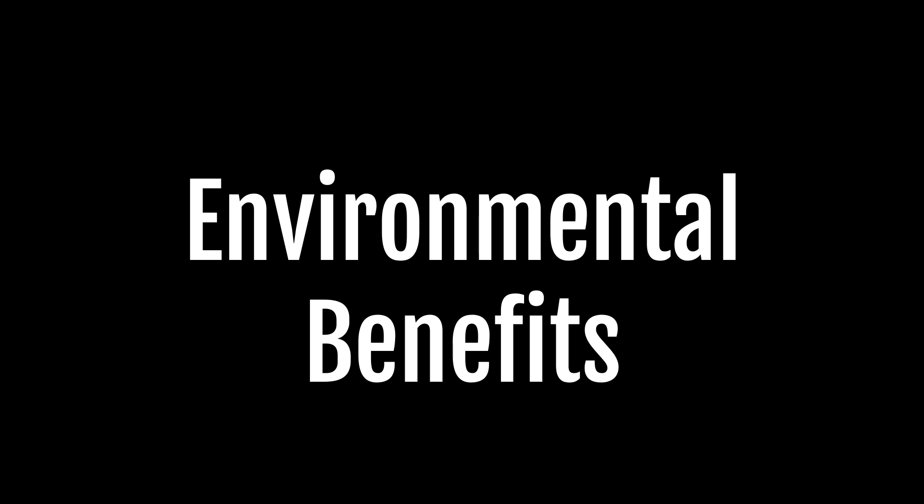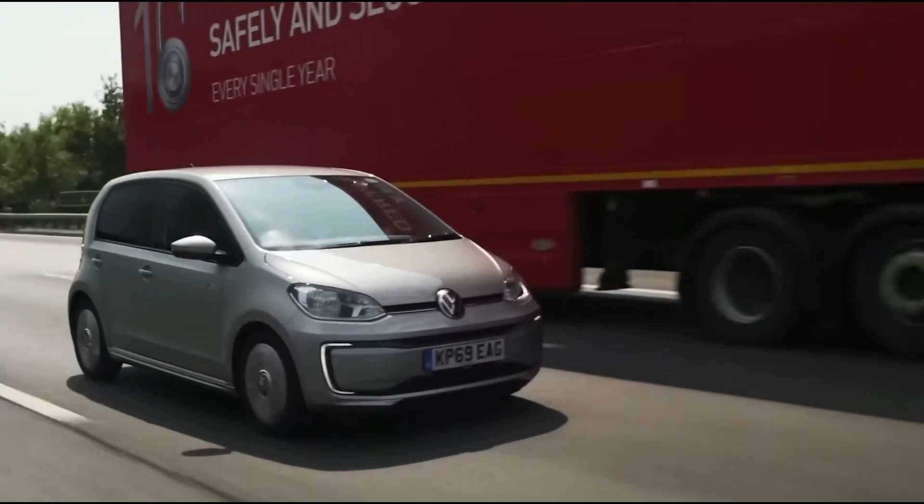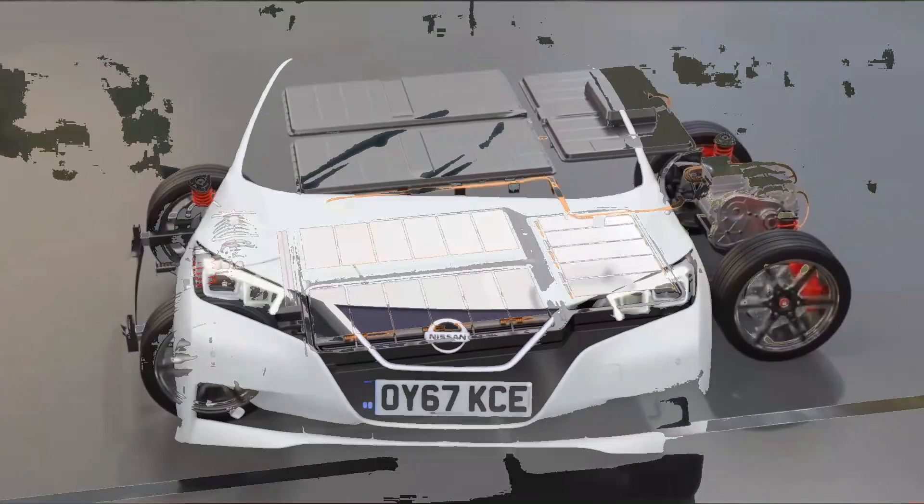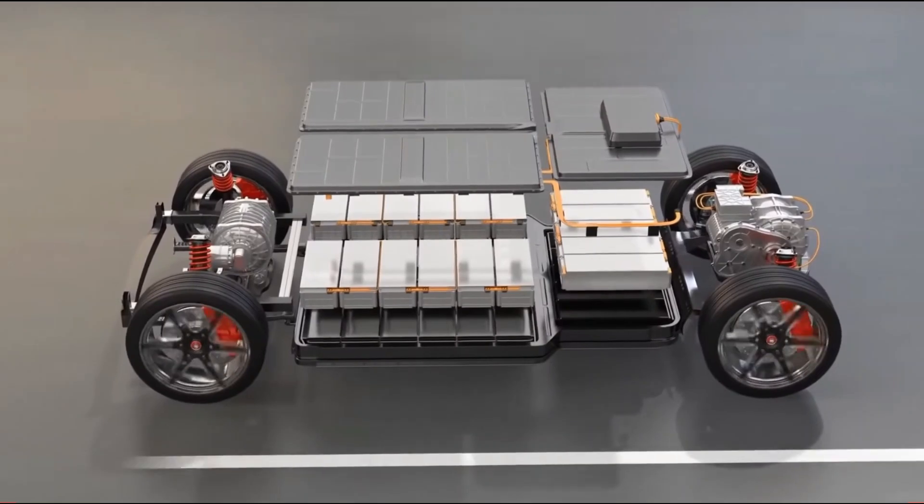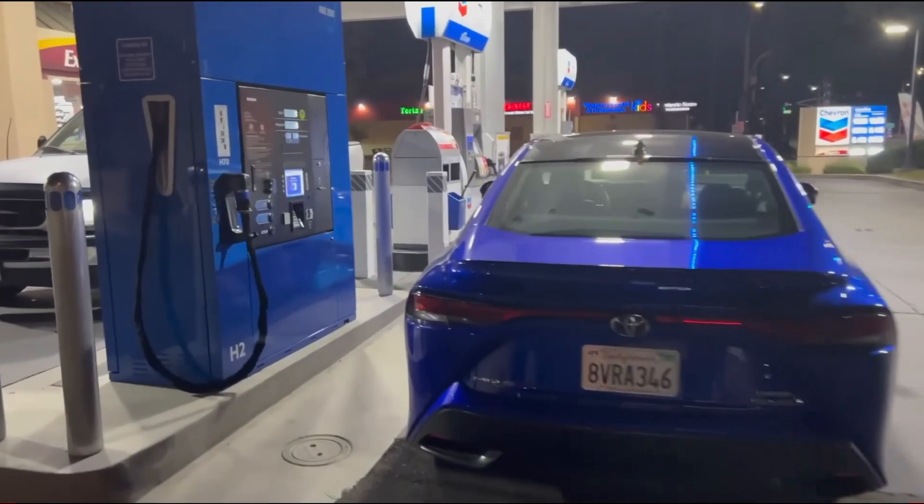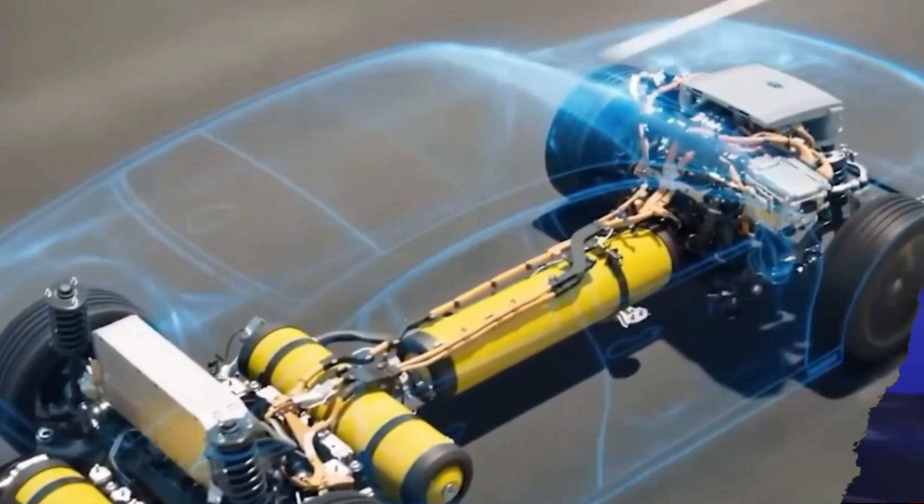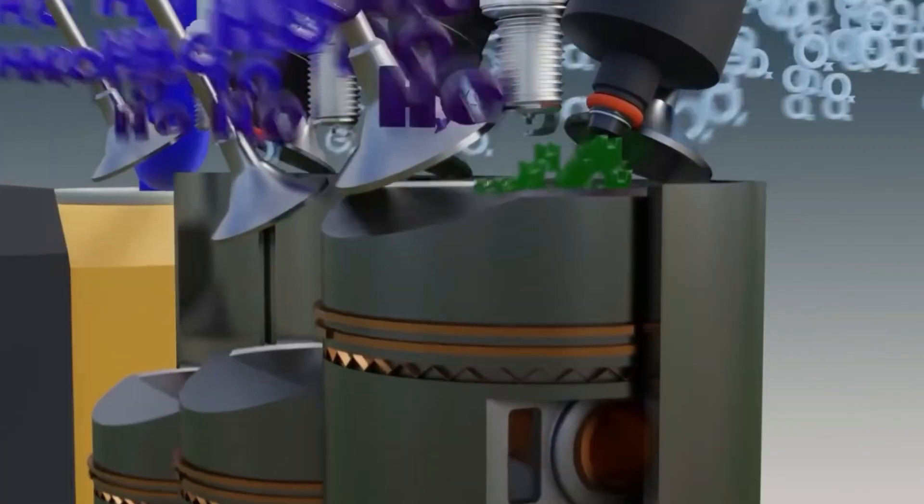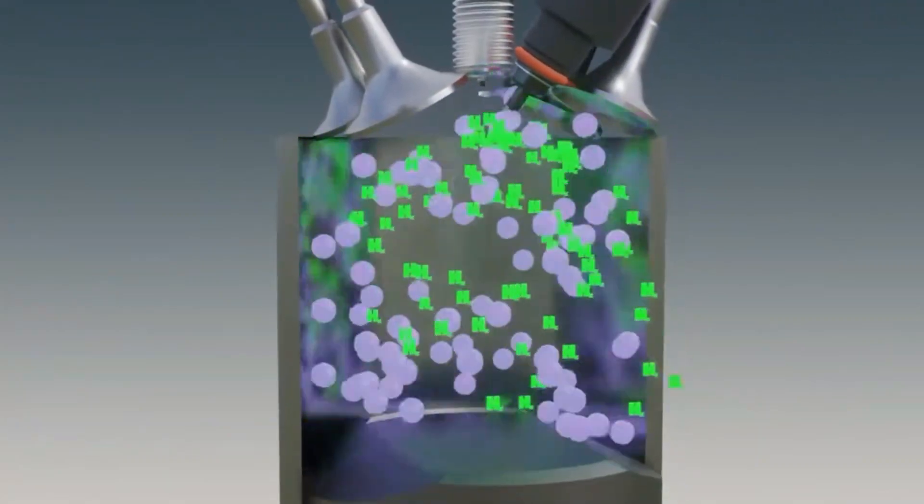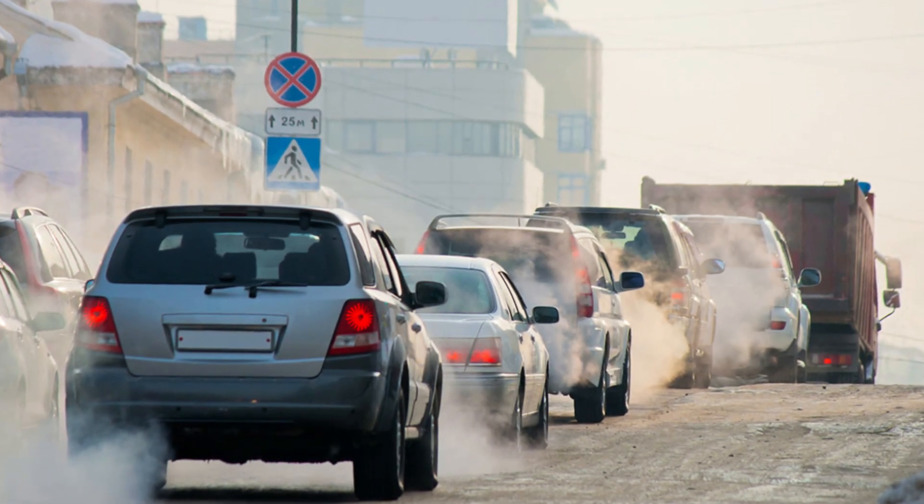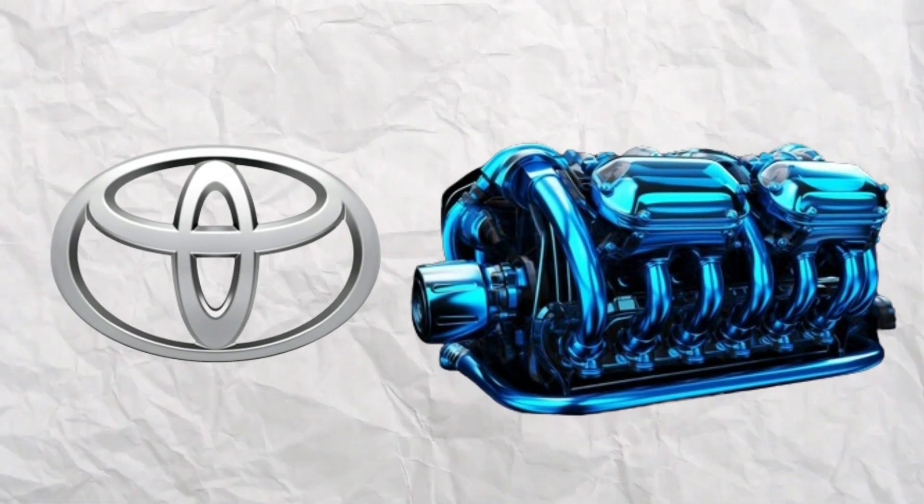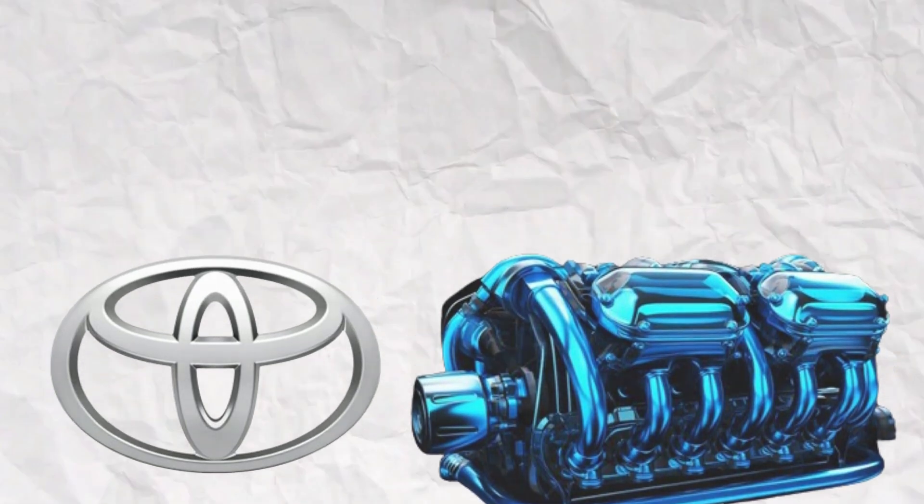Environmental Benefits: While electric vehicles have been touted as a greener alternative to their internal combustion engine counterparts, they still rely on electricity generated from various sources. In contrast, Toyota's water engine offers a truly eco-friendly solution. By utilizing hydrogen and producing only water vapor as a byproduct, this engine contributes to a significant reduction in carbon emissions. As sustainability and environmental concerns continue to drive consumer preferences, Toyota's water engine holds a competitive advantage over traditional EVs.